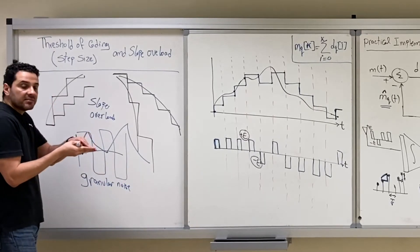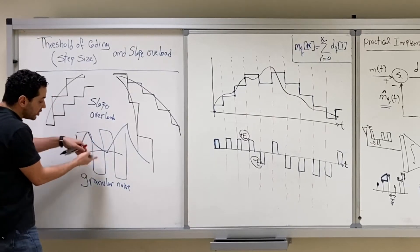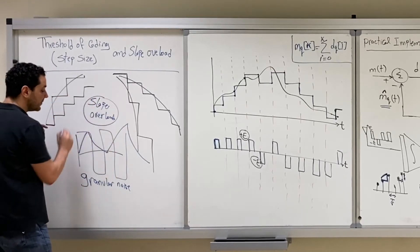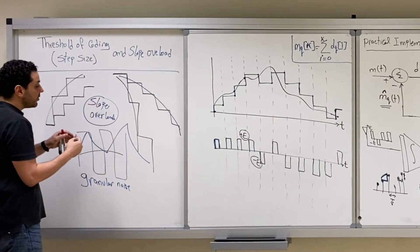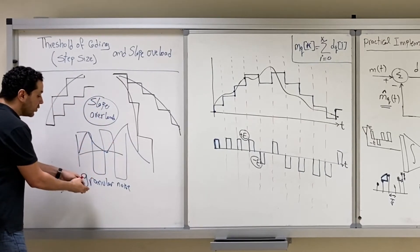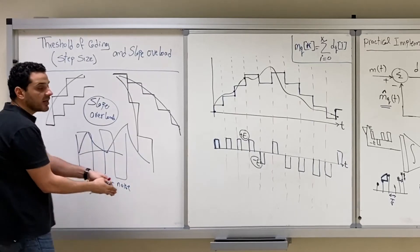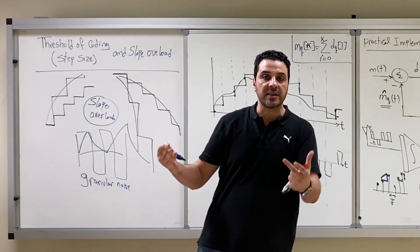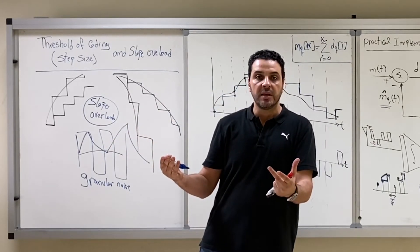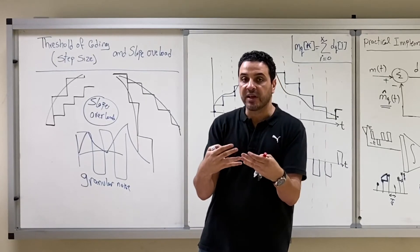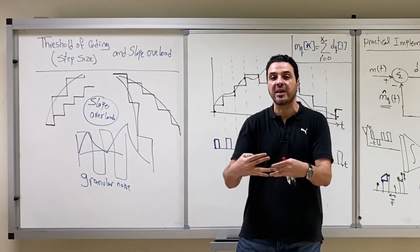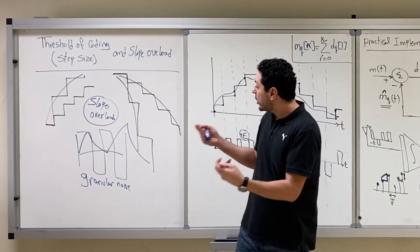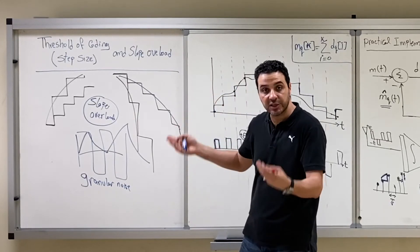If you reduce the step size, the granular noise can be reduced, but then you will have a problem of slope overload. So you can solve slope overload by increasing the step size, and to solve granular noise you need a small step size. These two problems are in conflict — one needs the step size to be large and the other needs it to be small.